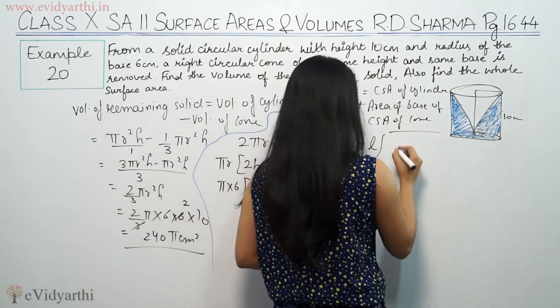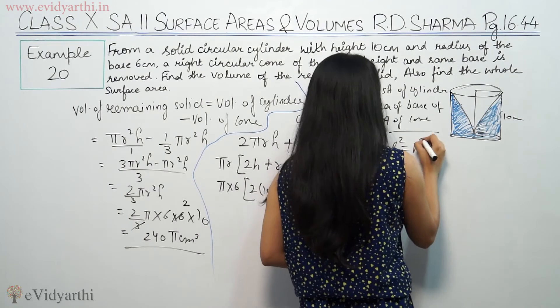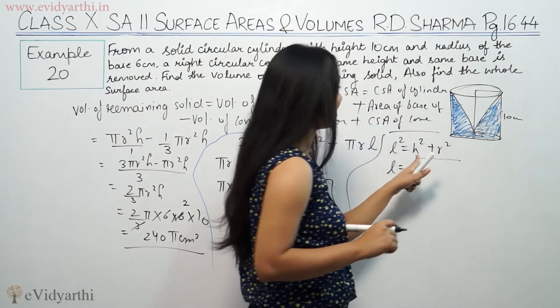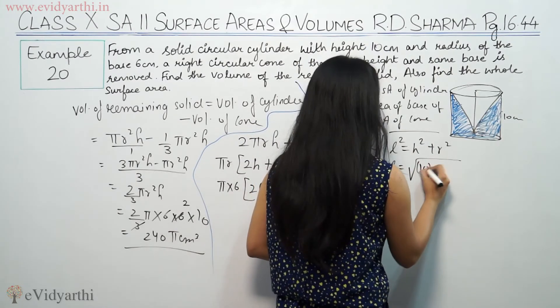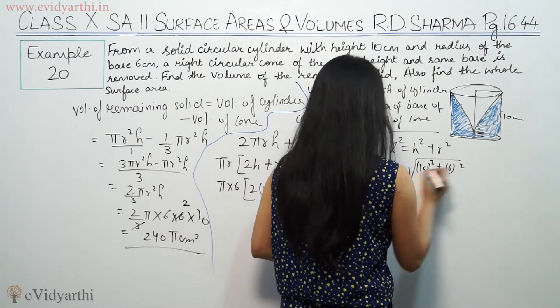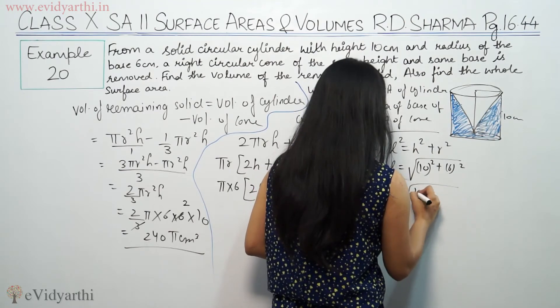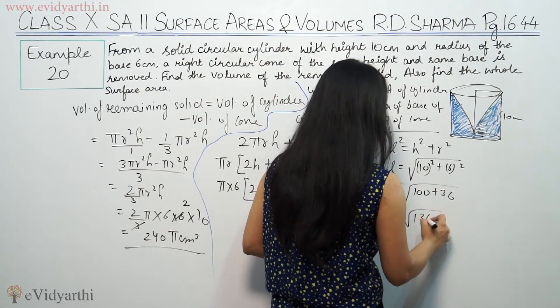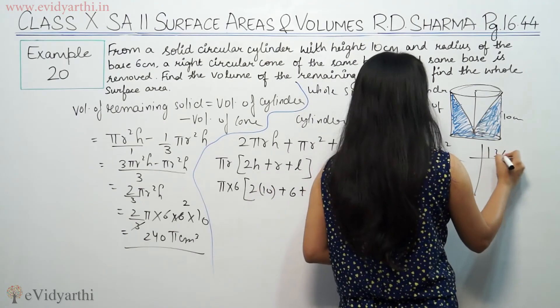Formula for l: l² = h² + r². So l equals square root of h² plus r². Height is 10 squared, radius is 6 squared. So l equals square root of 100 plus 36, which is square root of 136.